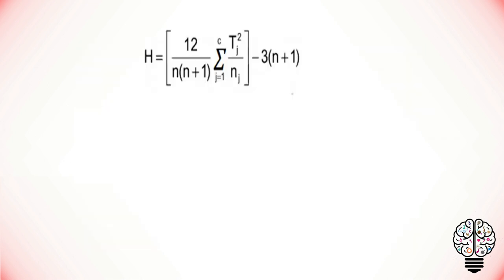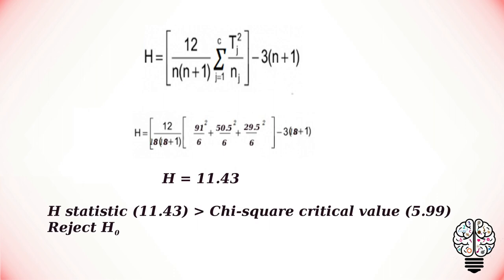Now let us substitute the values in the formula. If we calculate, we get the H value as 11.43. Since our H statistic is greater than the chi-square critical value, our null hypothesis is rejected and therefore there is a statistically significant difference between the groups.